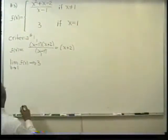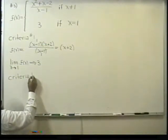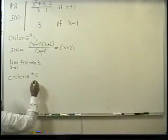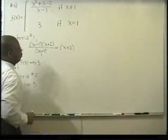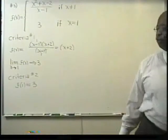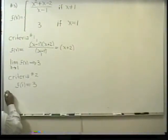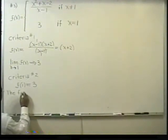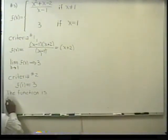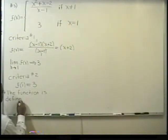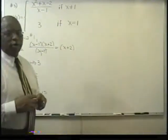Criteria number two. Well, the criteria number two, the definition says, is the function defined at that particular value that we're trying to look at. And lo and behold, notice that f of one is equal to three. So f of one is equal to three. So yes, the function does exist. And let me write that down. The function is defined at x equals one.